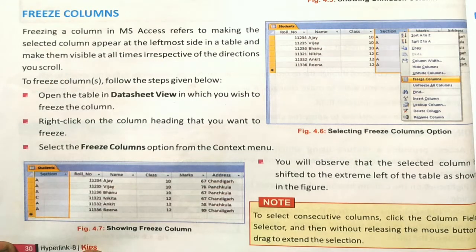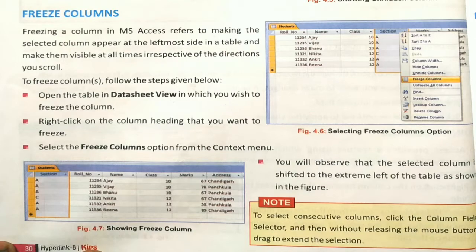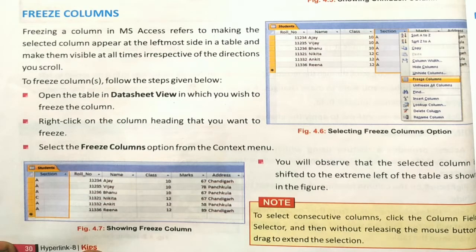Freezing columns: freezing a column in MS Access refers to making the selected column appear at the leftmost side of the table and keeping it visible at all times, regardless of the direction you scroll. To freeze a column, open the table in Datasheet View and find the column you wish to freeze.